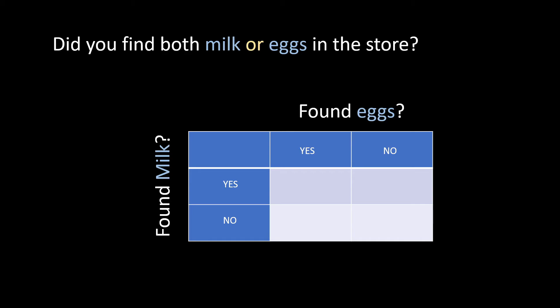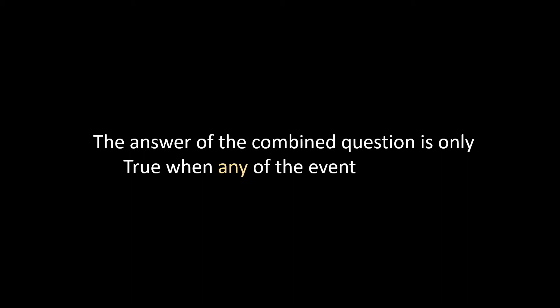We'll see that if we find eggs as well as milk, the answer to the combined question is yes because we found the milk as well as the eggs. If we didn't find - suppose we did not find the eggs but we found the milk - so as we had a choice between finding milk or eggs, the answer to the combined question will be yes. Similarly, if we found the eggs and did not find the milk, the answer to the combined question would also be yes. The only time the answer to the combined question will be no is when we didn't find milk or the egg. So the answer of the combined question is only true when any of the events are true.